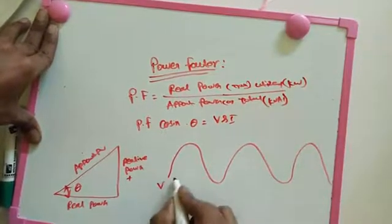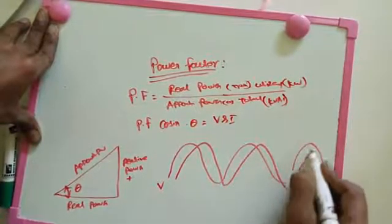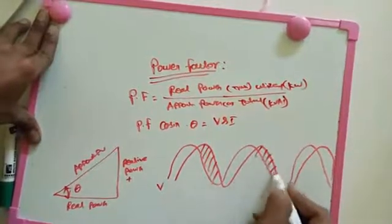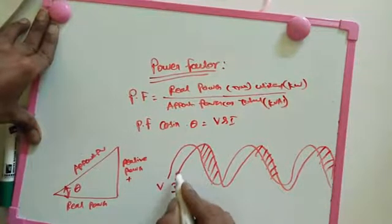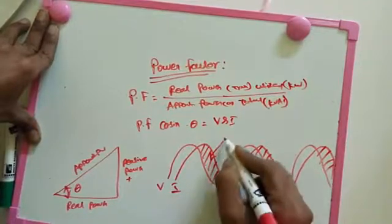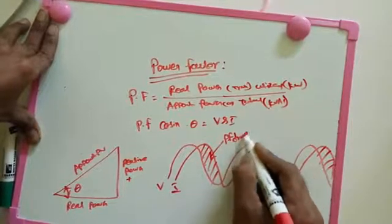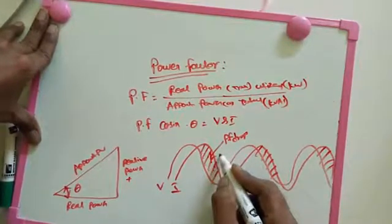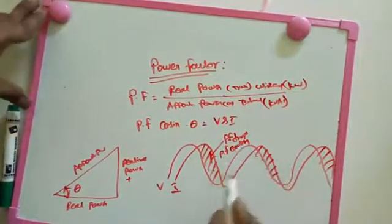This is the voltage waveform, and this one is for current. We can see voltage and current. This area shown is the power factor problem — we need to neutralize or rectify this area. This process is called power factor correction.